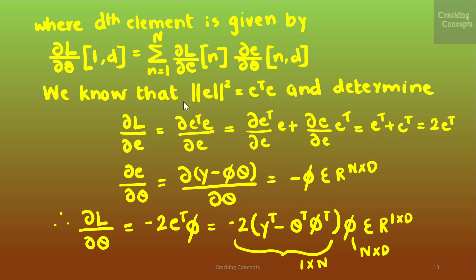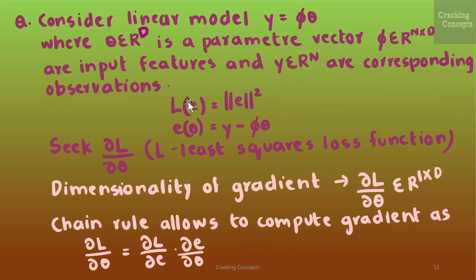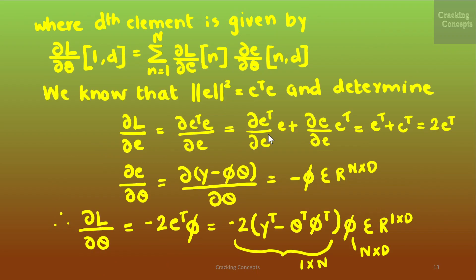We know that ‖e‖² = eᵀe, so we determine ∂l/∂e = ∂(eᵀe)/∂e. Using the product rule, this can be written as (∂e/∂e)·e + (∂e/∂e)·eᵀ = eᵀ + eᵀ = 2eᵀ. For ∂e/∂θ: since e(θ) = y − Φθ, substituting gives ∂e/∂θ = −Φ, which belongs to ℝⁿˣᵈ.